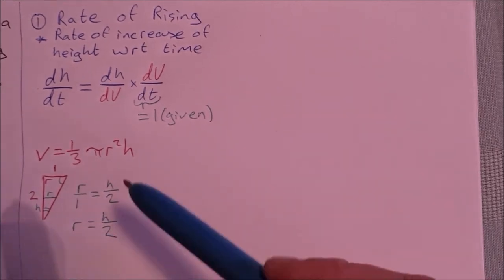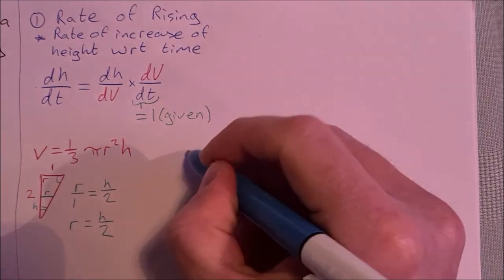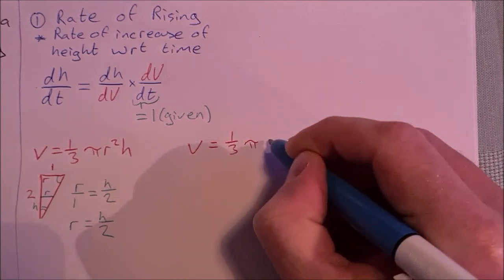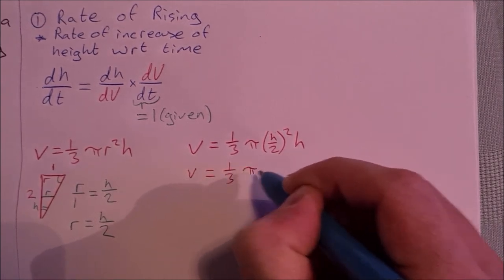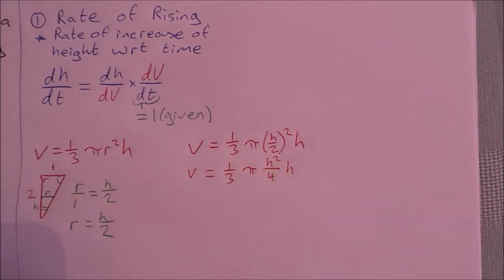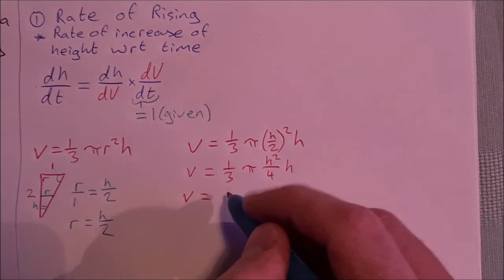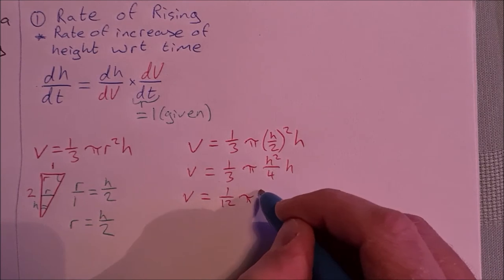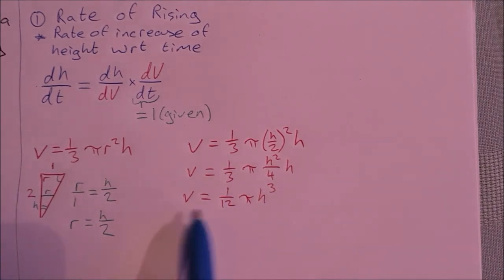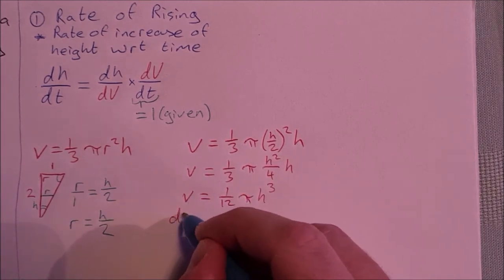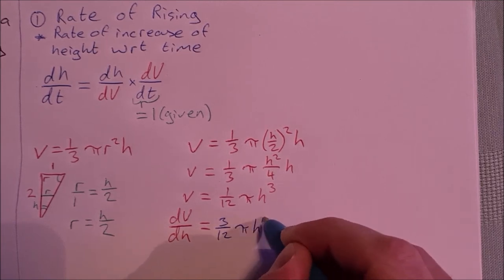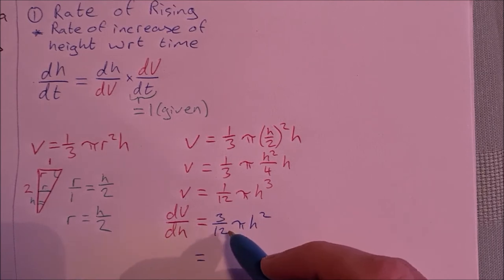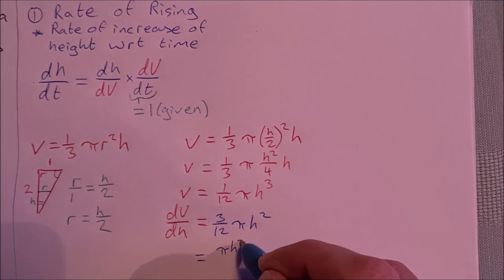Now I can replace r with h/2. So v = (1/3)π(h/2)²h = (1/3)π(h²/4)h. Simplifying: v = (1/12)πh³. Now I have the volume of the cone in terms of h only, and I can differentiate that to get dv/dh. Differentiating: dv/dh = 3 × (1/12)πh² = (3/12)πh² = (π/4)h².